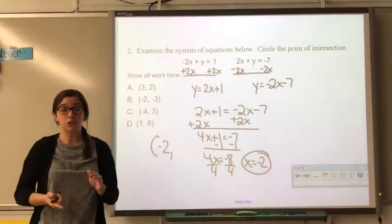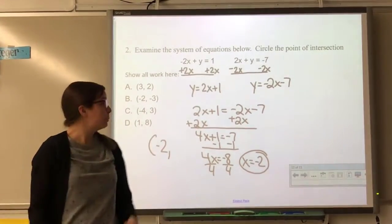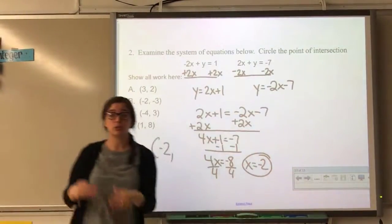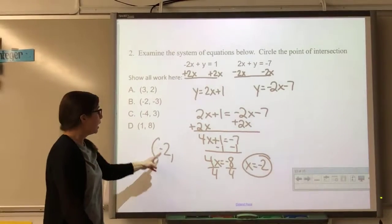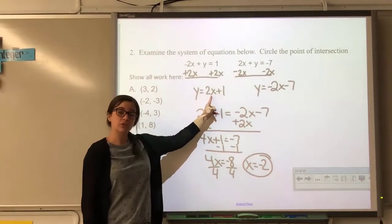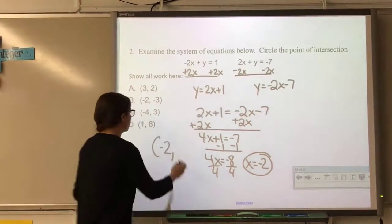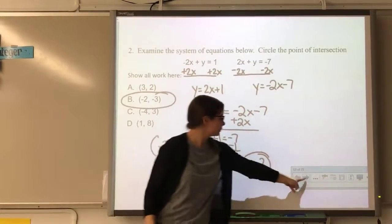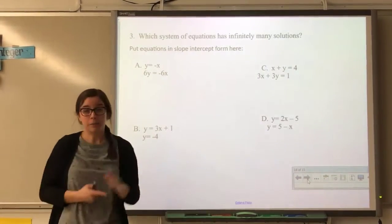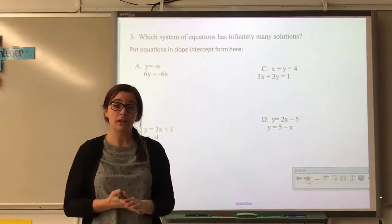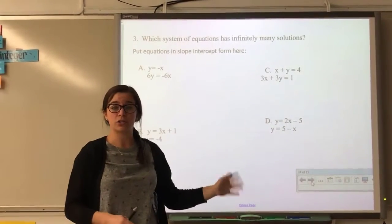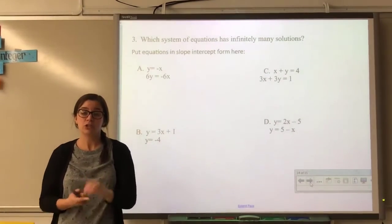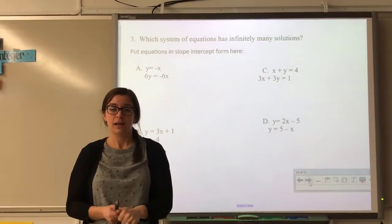Remember, you're not done when you find your x value — you have to substitute it back into one of your original equations to find the y value, which is where the two equations intersect. For example: 2 times negative 2 is negative 4, and negative 4 plus 1 is negative 3. Make sure you solve the rest of the systems of equations problems and turn in your packet when you're done. Have a good day and a nice weekend!